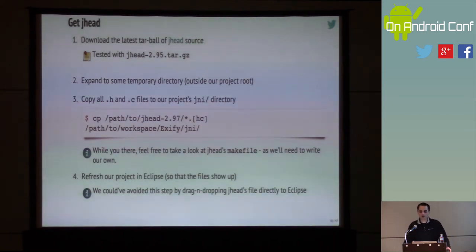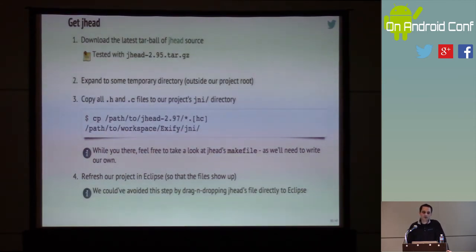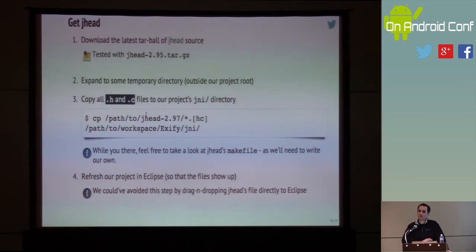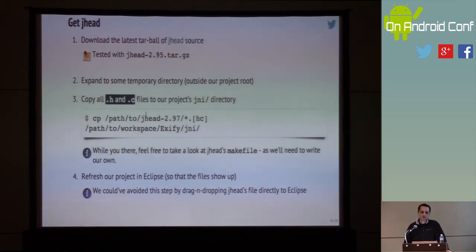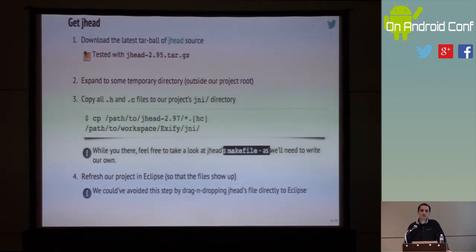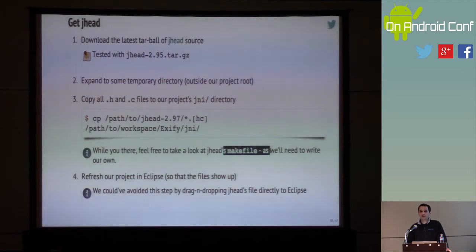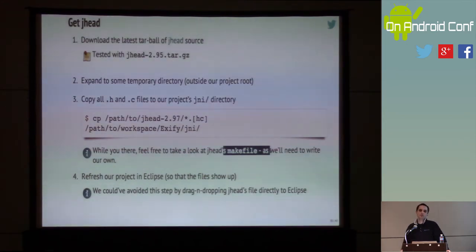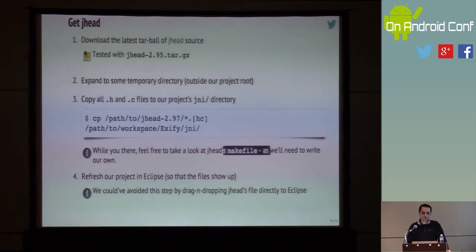For jhead, I would go to the website, download the tarball, then copy only the C and header files to the JNI directory — I don't care about the makefile, documentation, or any auto-conf stuff, just the raw source. Then I'd create my own makefile because the one that comes with jhead isn't good enough for us. If you have a complicated library there is a tool called androgenizer that can take a makefile written with auto-conf in mind and convert it to something NDK understands. Thankfully jhead isn't that complicated.